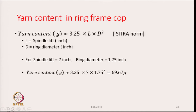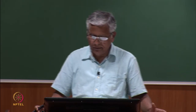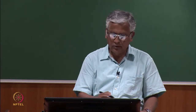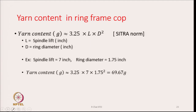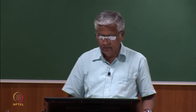The yarn content in a ring frame cop is given by the empirical formula (from CITRA): yarn content in grams = 3.25 × l × d², where l is spindle lift in inches and d is ring diameter in inches. For a spindle lift of 7 inches and ring diameter of 17.75 inches, the yarn content is approximately 69.67 grams. This practical formula is widely used in industrial settings.